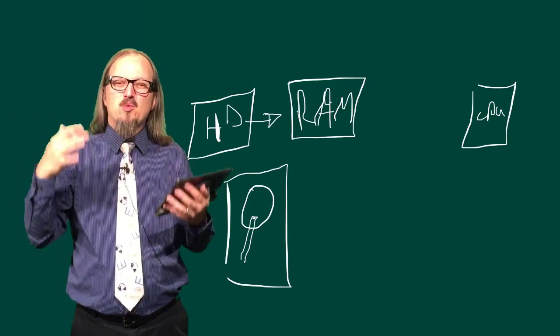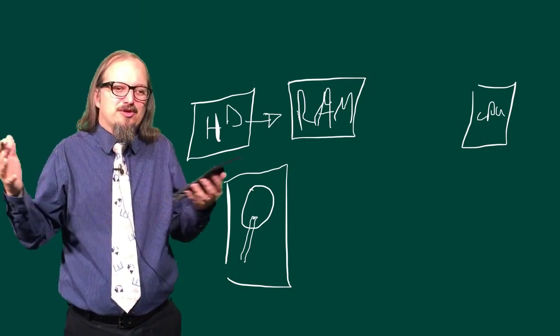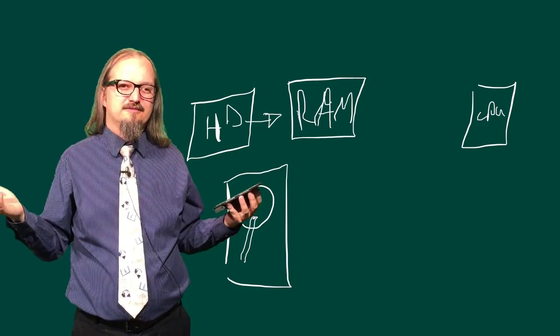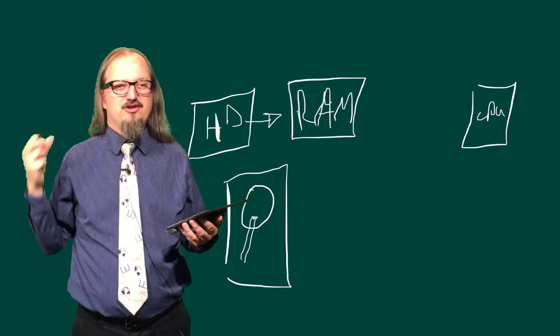So the RAM is kind of our working space. It's where we're storing all of the stuff while we're working on it and when we're done, we put it back away in the hard drive. And when we need it again, we get it out of the hard drive.